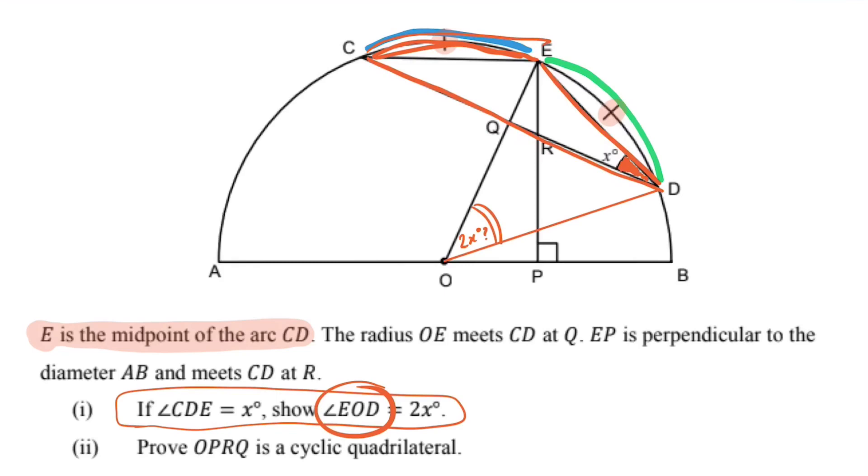And so the angle that's standing on that same arc, arc CE, but is at the center, is going to look like this. This is the arc I'm interested in, yeah? So, COE, this guy in here,